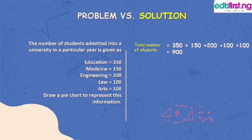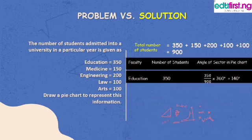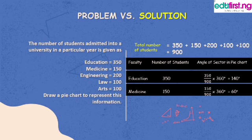Let's look at an example. The number of students admitted into a university in a particular year is given as: Faculty of Education — 350 students, Medicine — 150 students, Engineering — 200 students, Law — 100 students, Arts — 100 students. We need to draw a pie chart. The first step is to add the total number of students: 350 + 150 + 200 + 100 + 100 = 900.